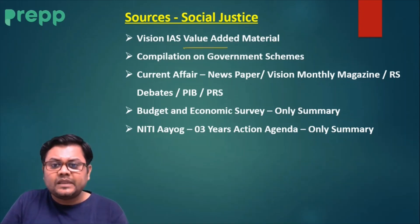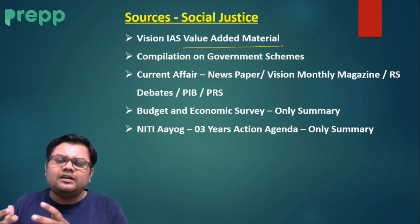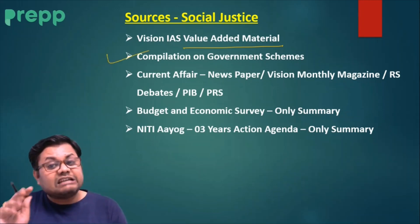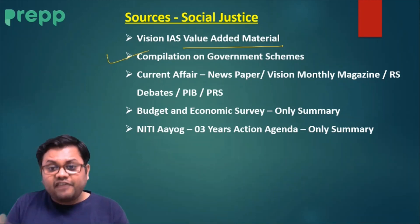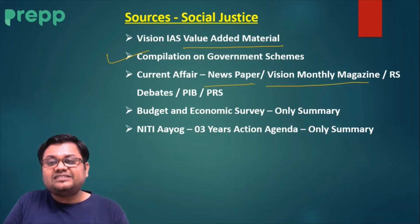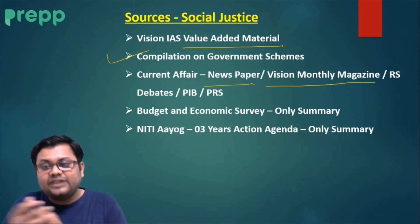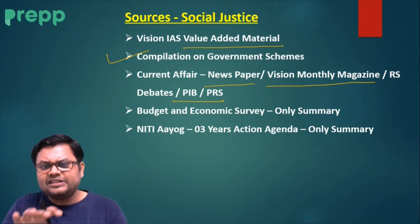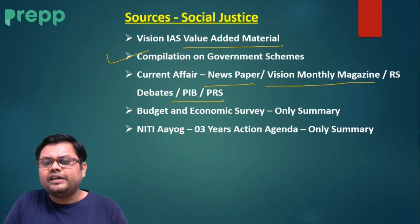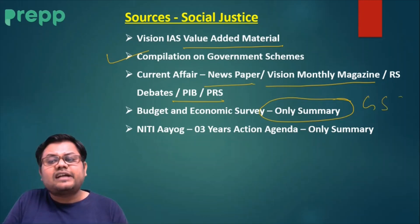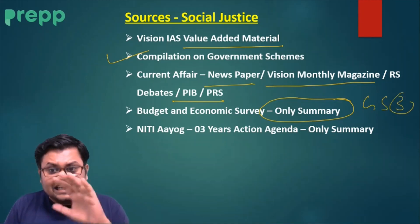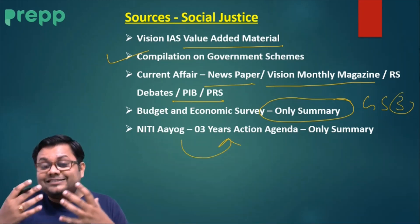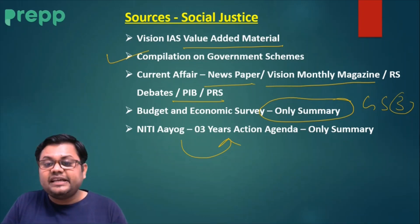For Social Justice sources, first is value-added material. Also follow a reputed coaching's government scheme compilation — Shankar IAS has a very good one. For current affairs, follow newspapers and Vision monthly magazine, and if you have time, Rajya Sabha debates, PIB, and PRS. Read the summary of Budget and Economic Survey — you will cover this in GS3 and just need to link it. NITI Aayog's 3-year Action Agenda is very important for Social Justice — read only its summary.